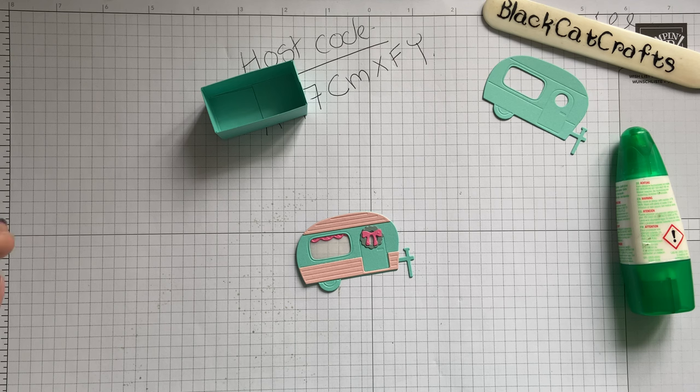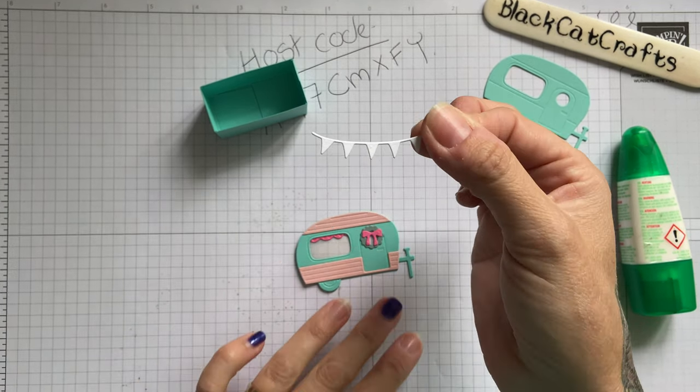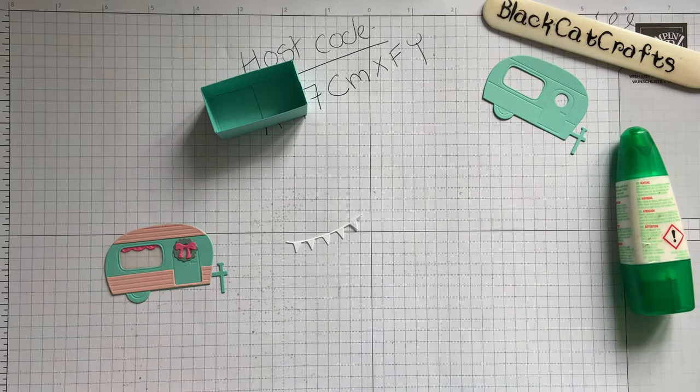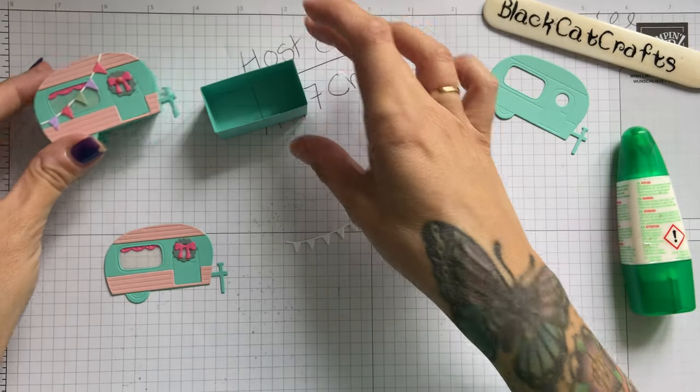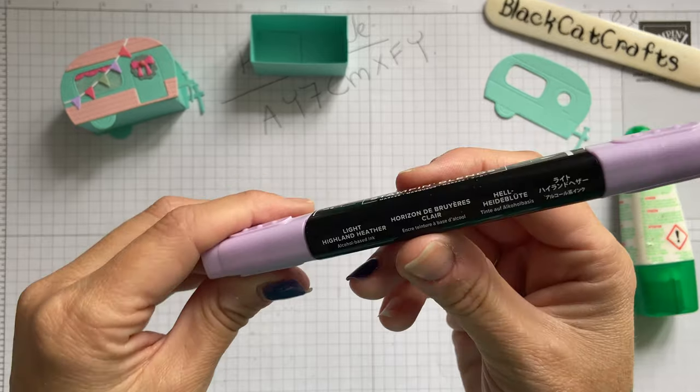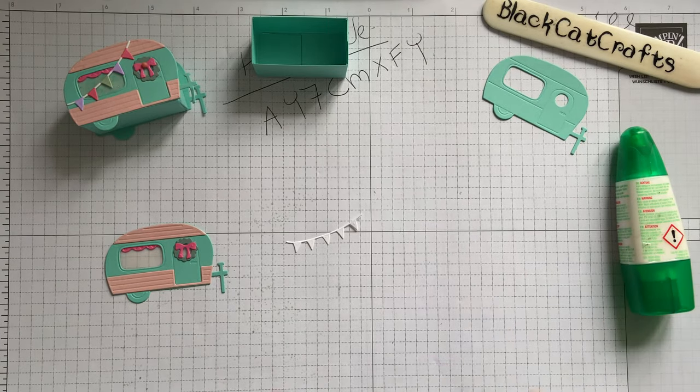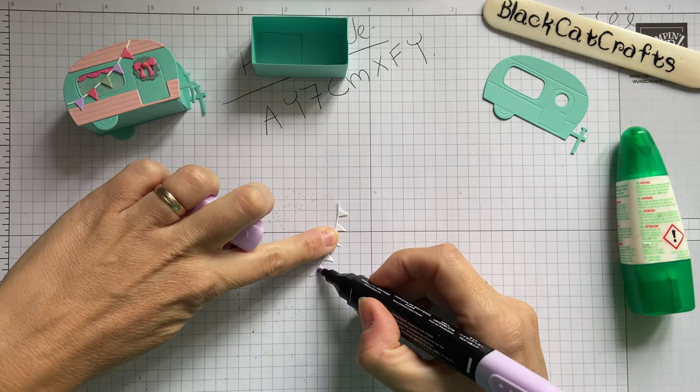And I've also cut out some bunting and I've just cut this out in basic white and I'm going to do a little bit of coloring as you can see on that one I've just colored in the flags. So we've got a light Highland heather, I'm going to use that side. I'm just going to colour in the flags.